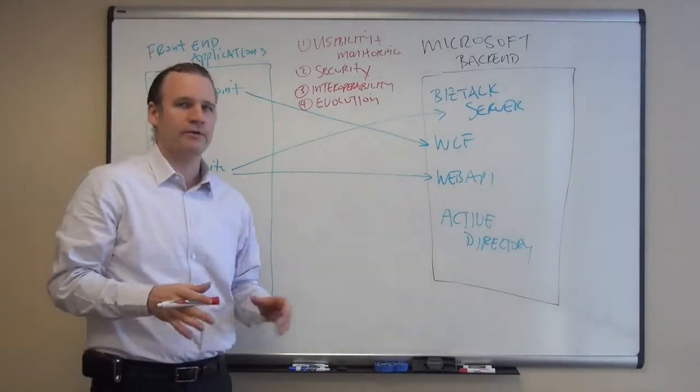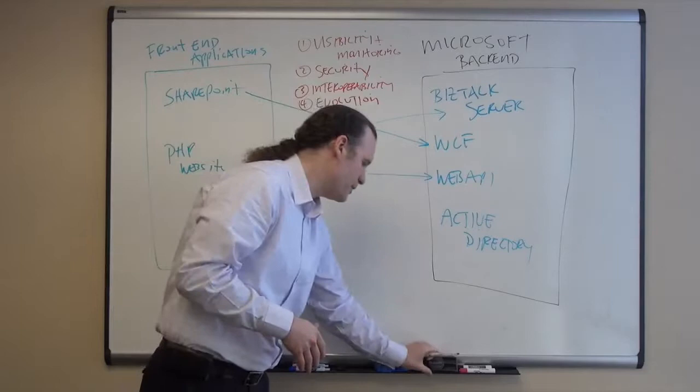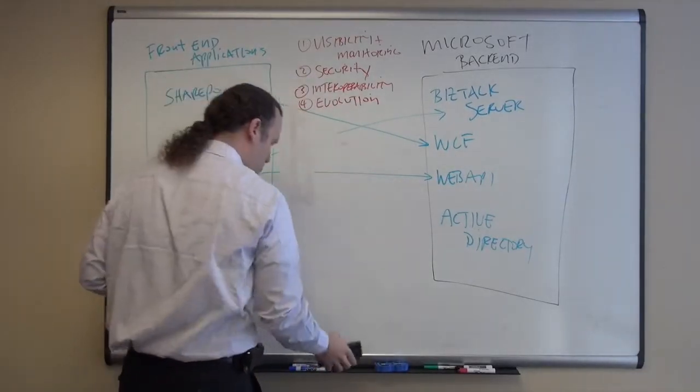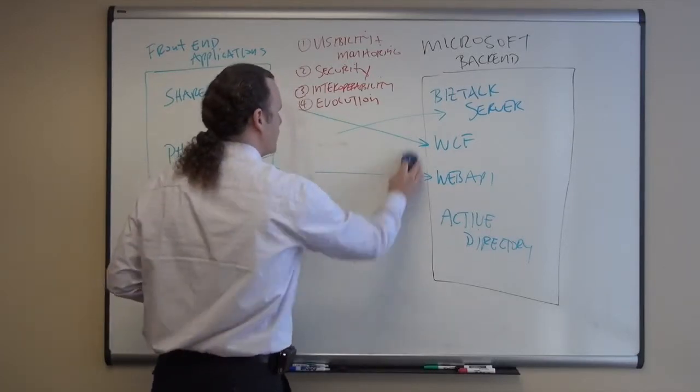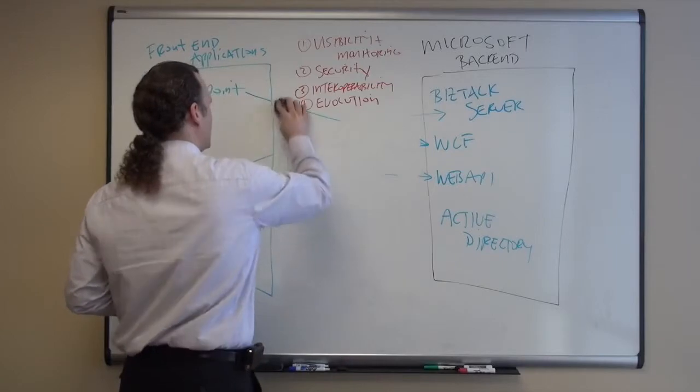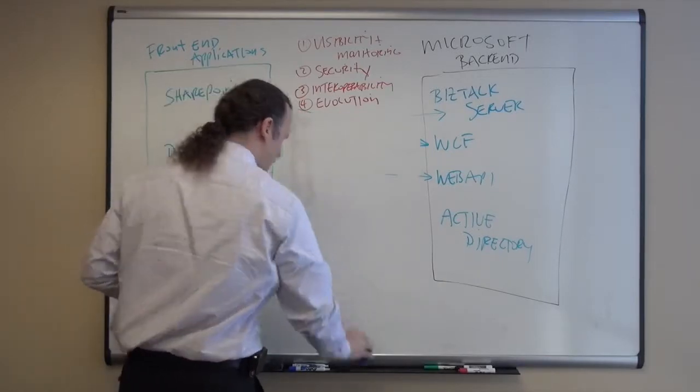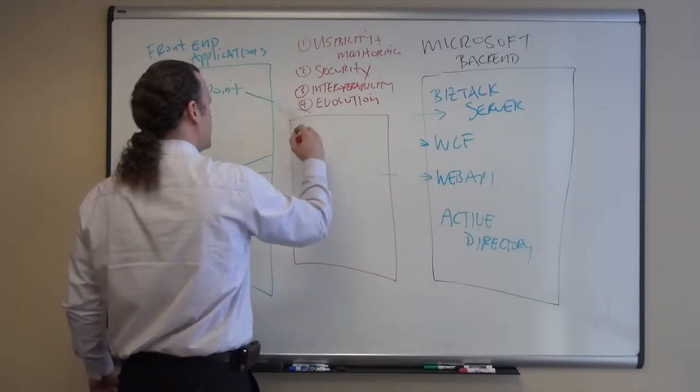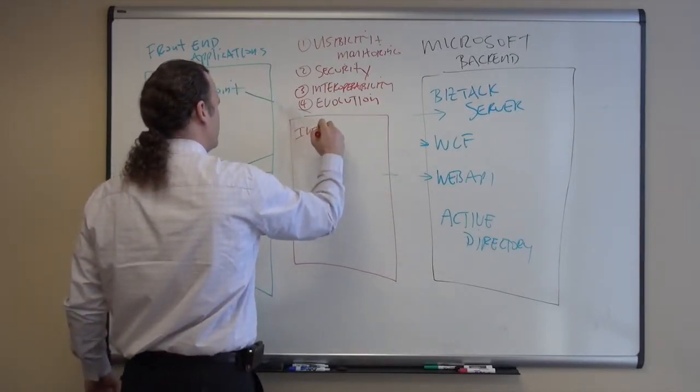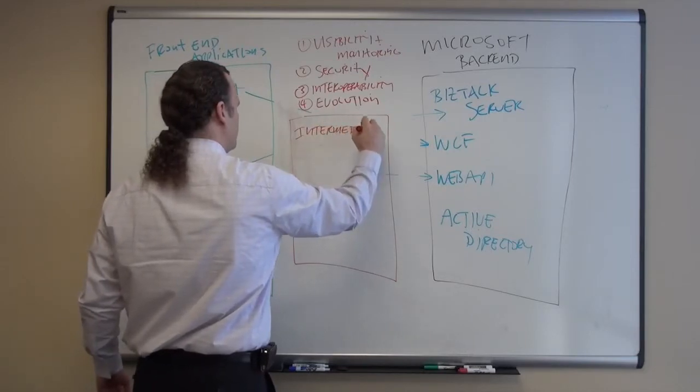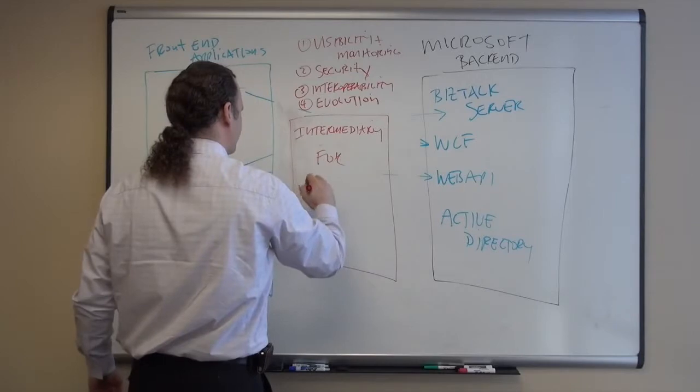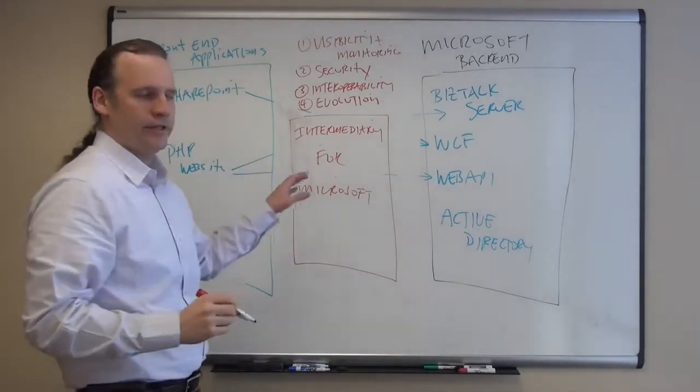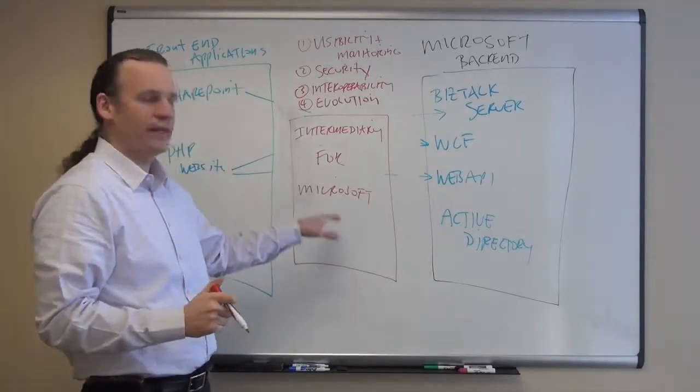So that gives you an idea of some of the challenges that you run into in your environment. So how can Intermediary for Microsoft help this scenario? Let me show you. Intermediary for Microsoft runs in between your front and your back. So what I'm going to do is I'm going to remove these existing lines and I'm going to show a slight architectural change that is going to make a big change to your infrastructure. So in red I'm going to draw a box and this box is Intermediary for Microsoft. Exciting new product.